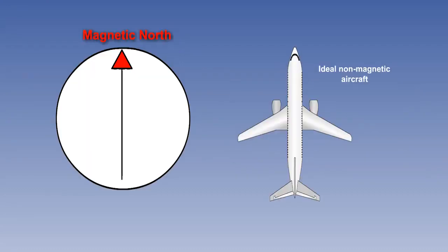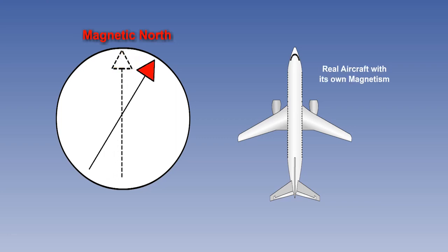In theory, a magnetic compass should align itself with the Earth's magnetic field and point to magnetic north. However, an aircraft's own magnetic field will attract the magnetic compass away from magnetic north. The direction in which the magnetic compass points as a result is known as compass north. The angle between compass north and magnetic north is known as the deviation.